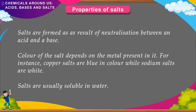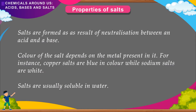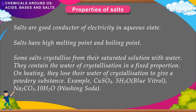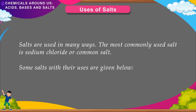Properties of salts: Salts are formed as a result of neutralization between an acid and a base. The color of the salt depends on the metal present in it — copper salts are blue in color, while sodium salts are white. Salts are usually soluble in water. Salts are good conductors of electricity in aqueous state. Salts have high melting and boiling points. Some salts crystallize from their saturated solution with water, containing water of crystallization in a fixed proportion; on heating, they lose their water of crystallization to give a powdery substance. Example: CuSO₄·5H₂O (blue vitriol), Na₂CO₃·10H₂O (washing soda).